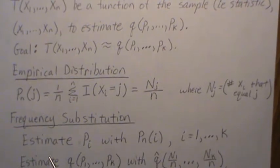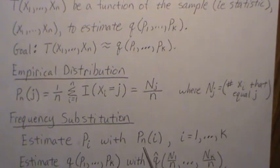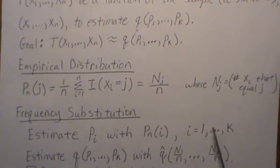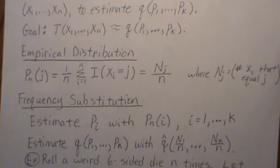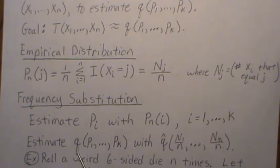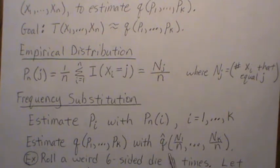Frequency substitution is: we estimate the ith probability with the ith empirical distribution p sub n of i, and we do that for all k. To estimate the function q of the unknown parameters, we call our estimate q-hat — an estimator if we leave the random variables generic, or an estimate if we plug in specific values.